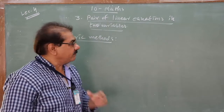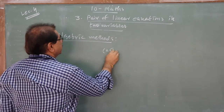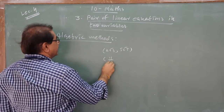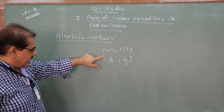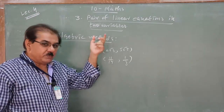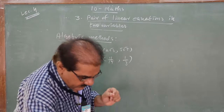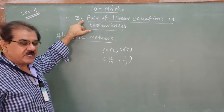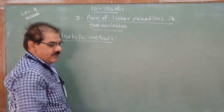Now, a problem arises when the values of x and y turn out to be something like 2√3, 5√7, or fractions like 11/17 or 1/3 — irrational or recurring rational numbers. Plotting such points on graph paper is difficult. To overcome this, we have additional methods for solving Pair of Linear Equations called Algebraic Methods, where we calculate and solve mathematically.